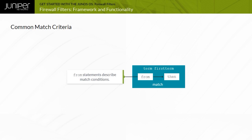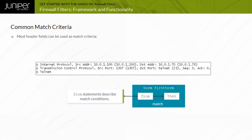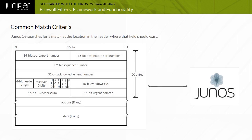You can specify the criteria for matching packets in from clauses within firewall filter terms, using many header fields as match criteria. However, not all header fields may be available due to how firewall filters are processed. When you specify a header field, Junos OS searches for a match at the location where that field should exist, but does not verify that the header field makes sense in the given context.